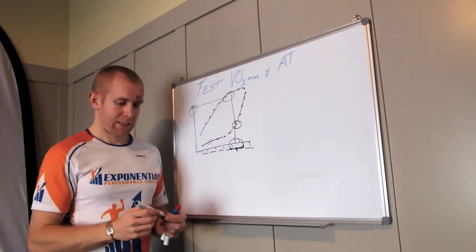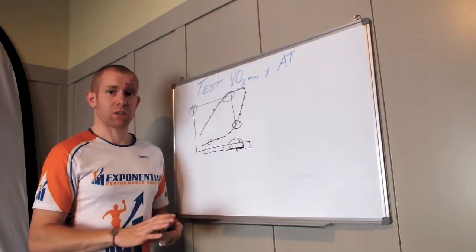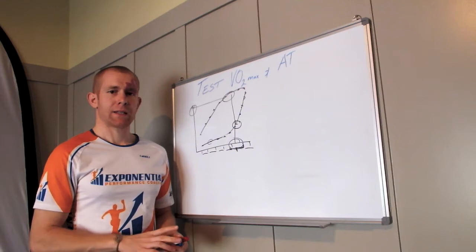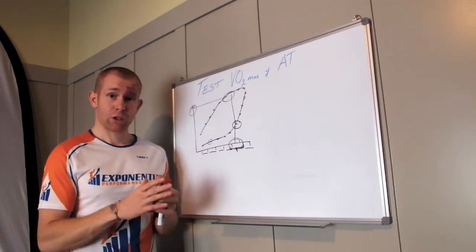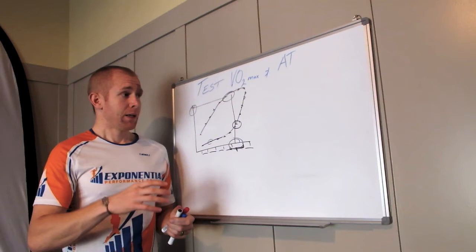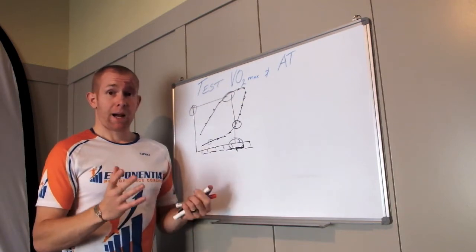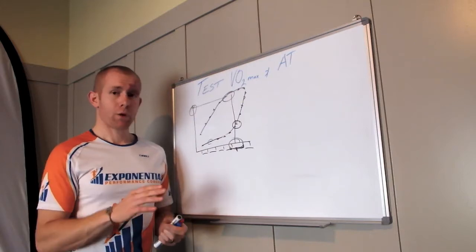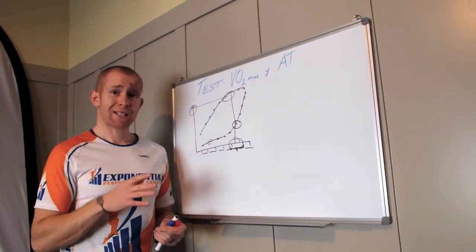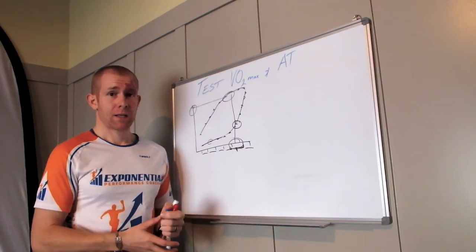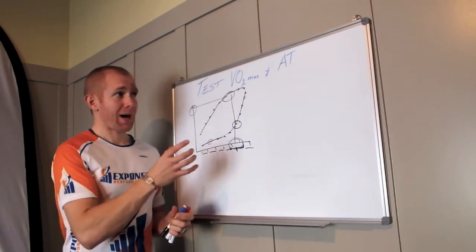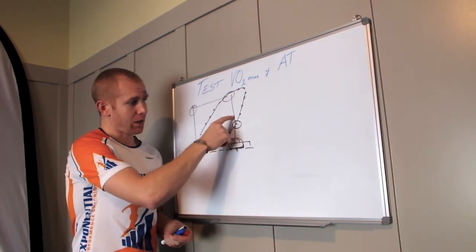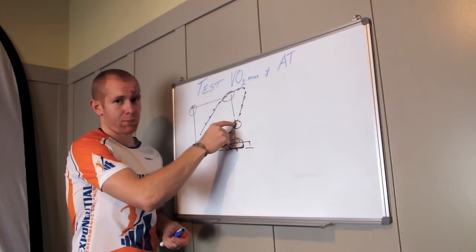Now the other way we can test is out in the field. There are really good field testing guidelines out there developed for the bike using power by Andy Coggin. He's the big power guru who's come up with a lot of tests. The field test is pretty simple. On a bike, you ride as hard as you can for 20 minutes. The power you produce over that 20 minute period is very close to what you would get in the lab at this point.